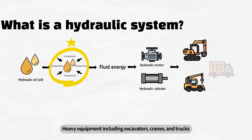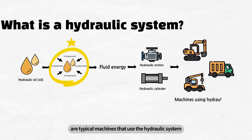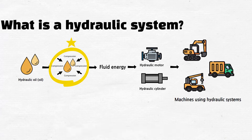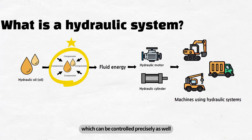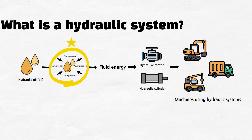Heavy equipment, including excavators, cranes and trucks, are typical machines that use hydraulic systems. Using the hydraulic system helps lift up or move a load easily and safely, which can be controlled precisely as well.